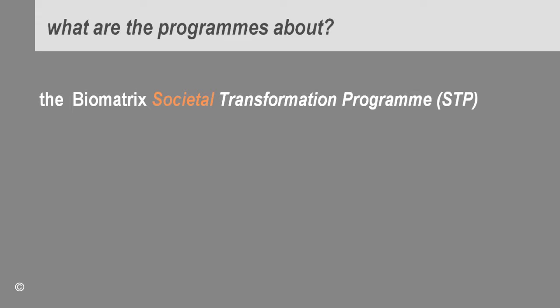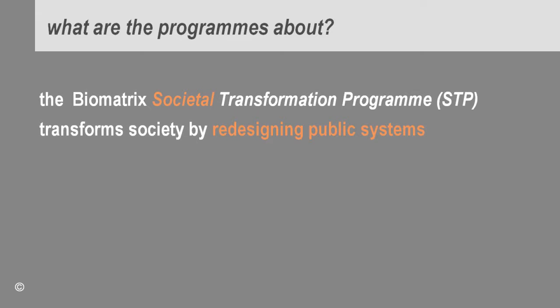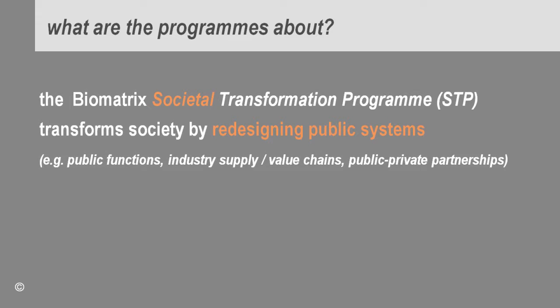What is the Society Transformation Program about? It transforms society by redesigning public systems. Public systems can include a public function like education, social welfare, or healthcare. It could be an industry supply chain, energy supply chain, or nutrition supply chain. And it can include public-private partnerships.